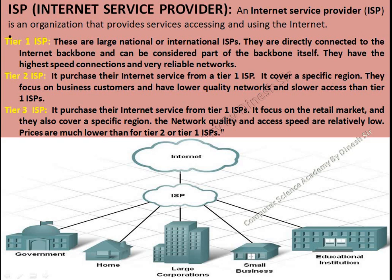Let's see what an ISP is and what types it has. There are three types of ISP. The first is Tier 1 ISP. Tier 1 ISPs are MNCs — multinational companies — that operate at a global level.